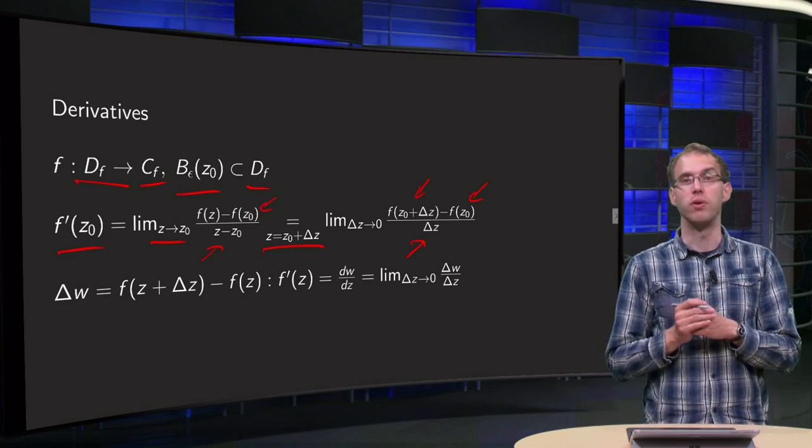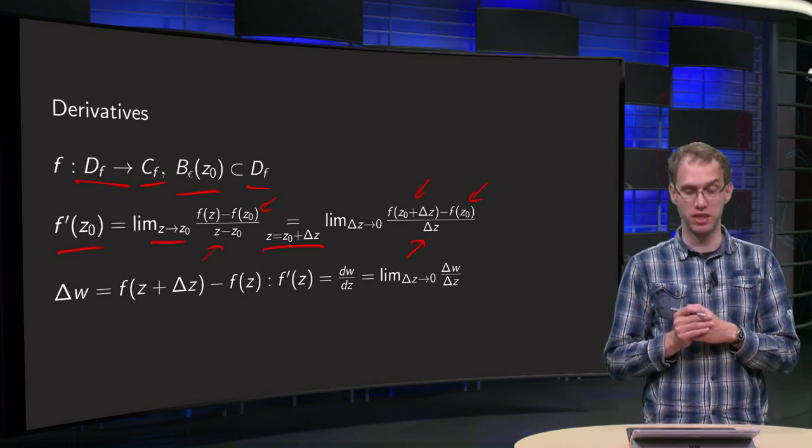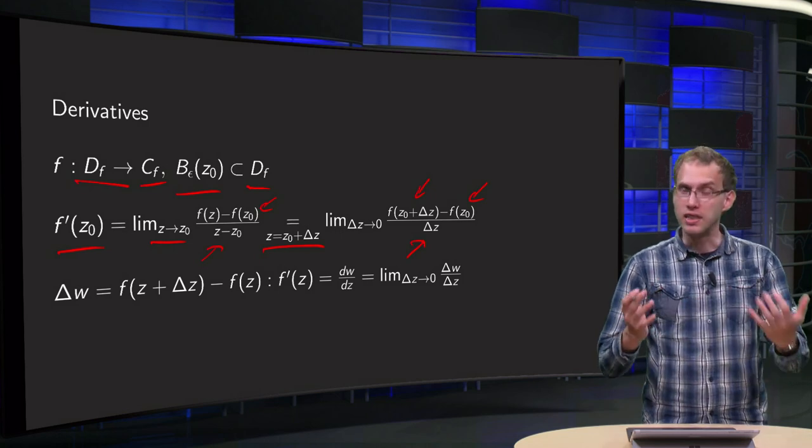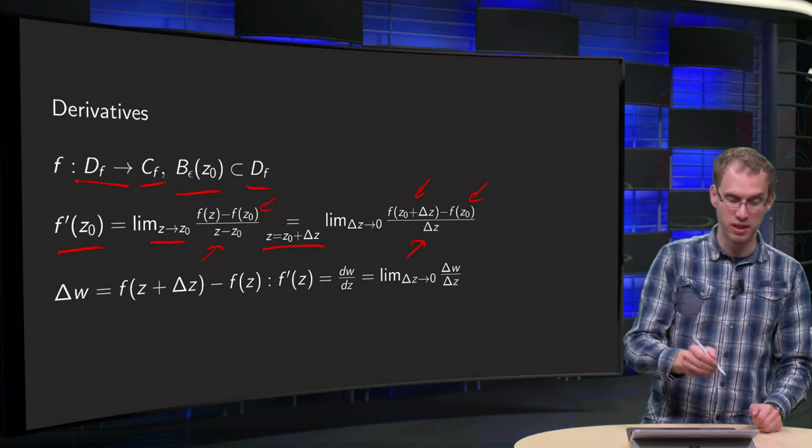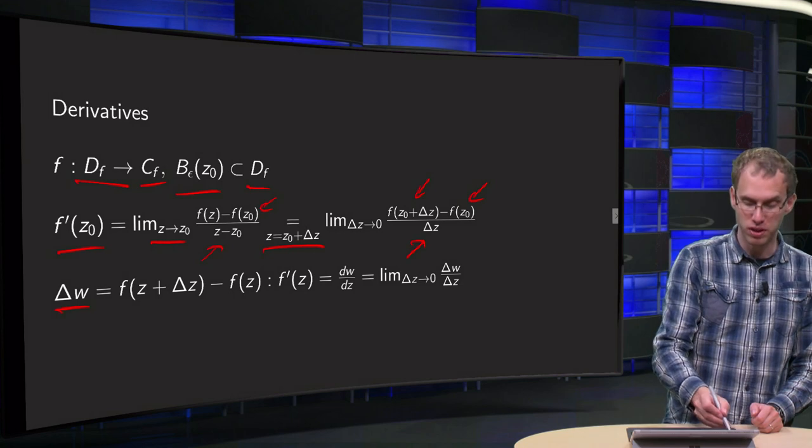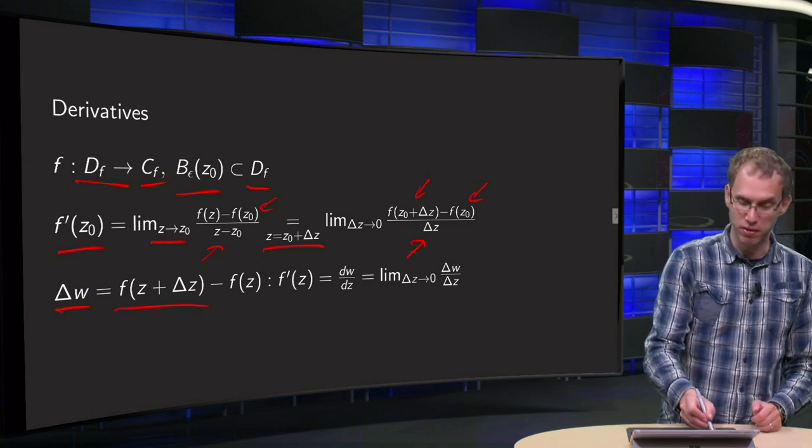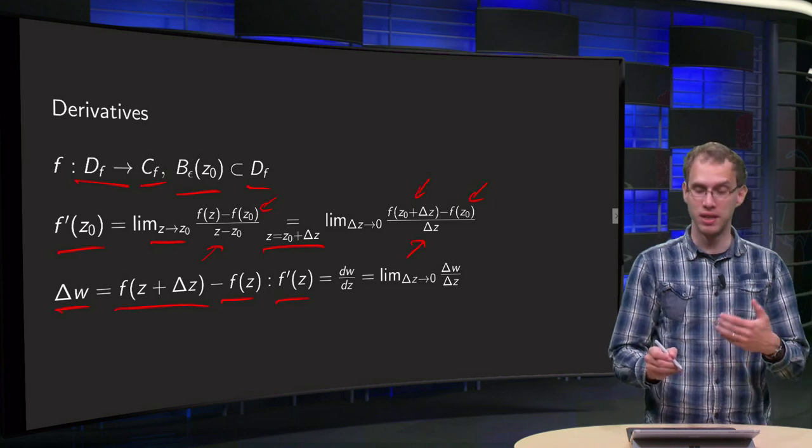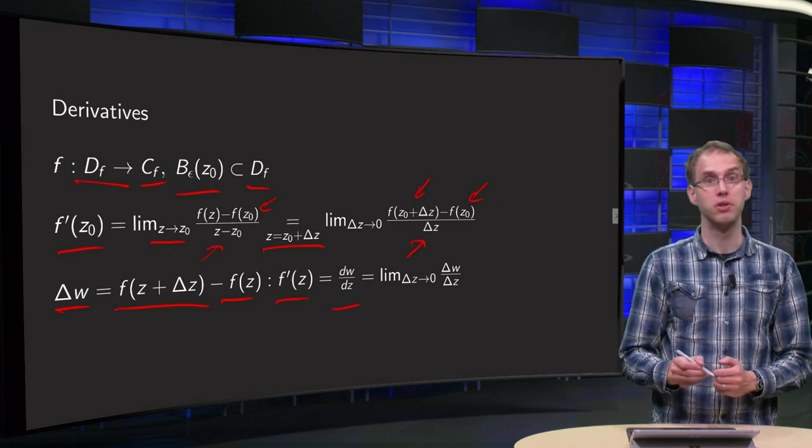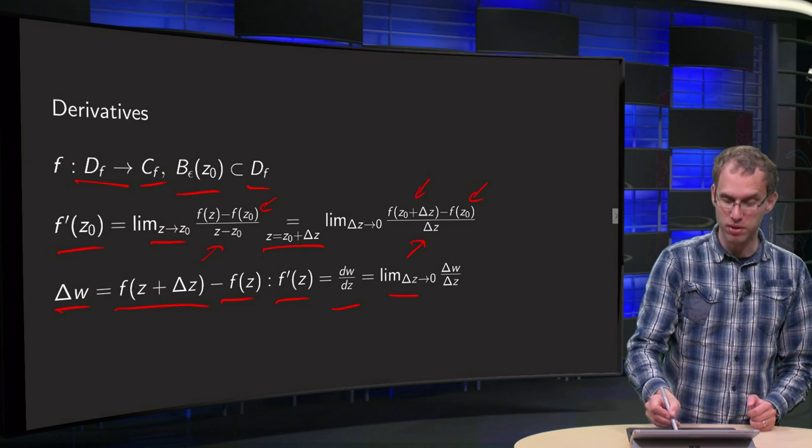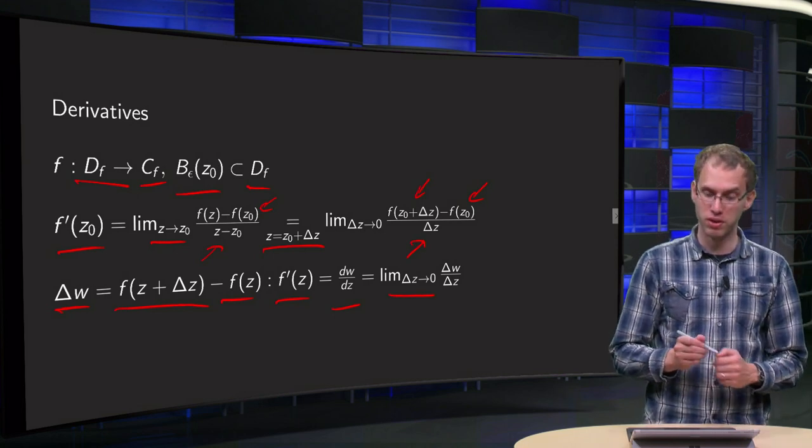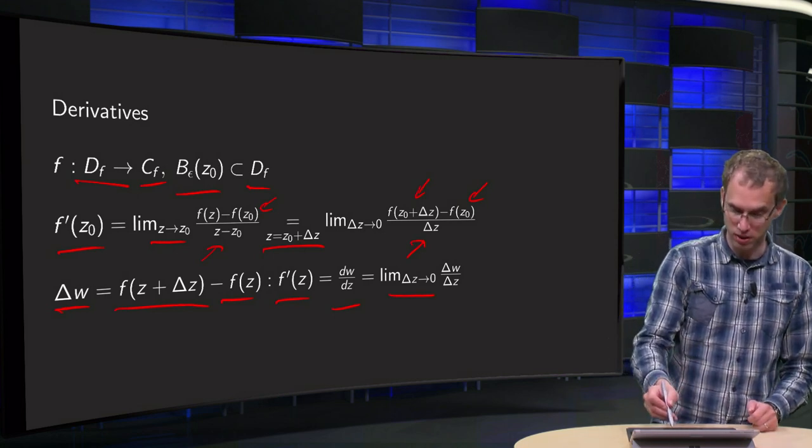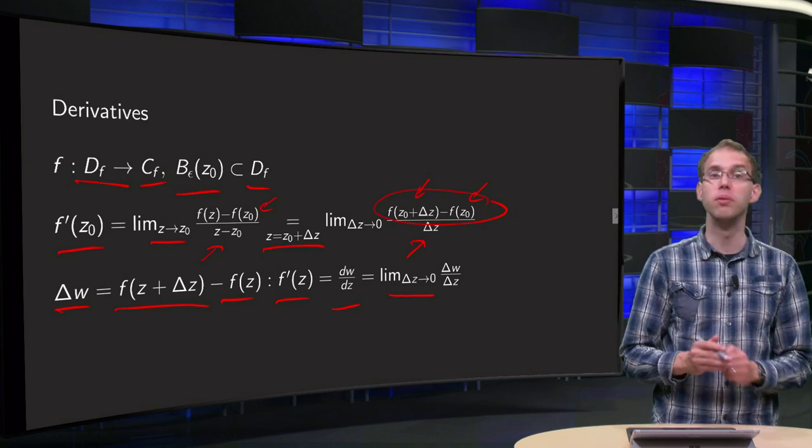So that's another way to compute the derivative at z0. And then in general for general z we can set delta w equals f of z plus delta z minus f of z. And then we find f prime in some general z equals dw/dz equals limit delta z to 0 of delta w over delta z, because then delta w is exactly the numerator over here.